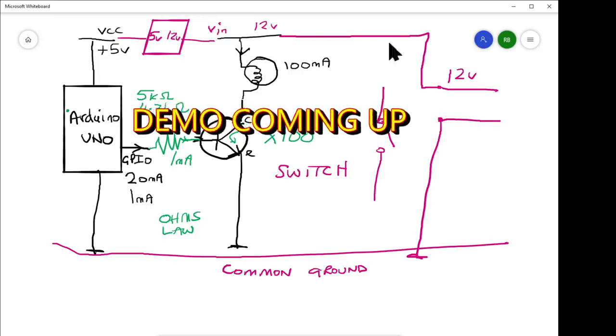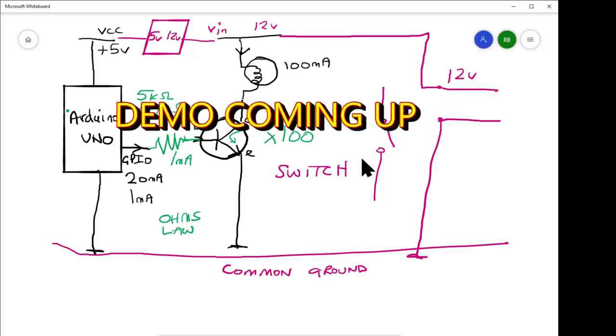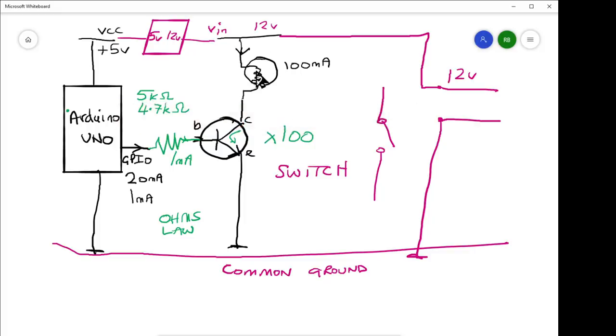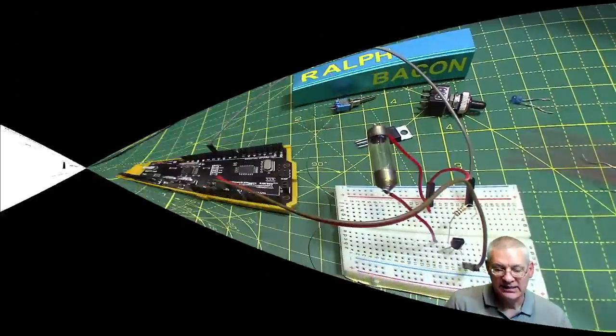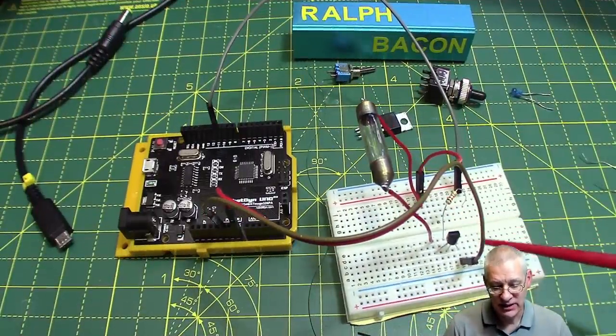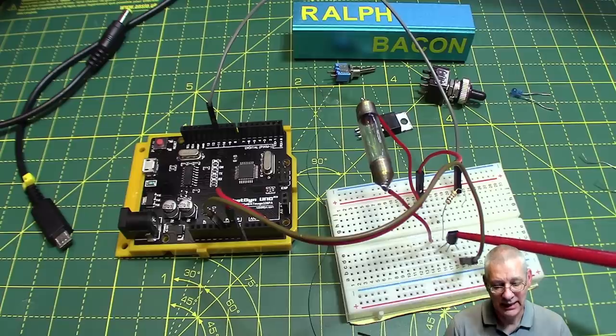I think perhaps we need to demonstrate this now on a breadboard and just see how we can drive a much higher bulb load using our 12-volt input and using a simple 2N2222A transistor. Great, let's have a go. So here we have a breadboard with the transistor on that I told you about, the 2N2222A.